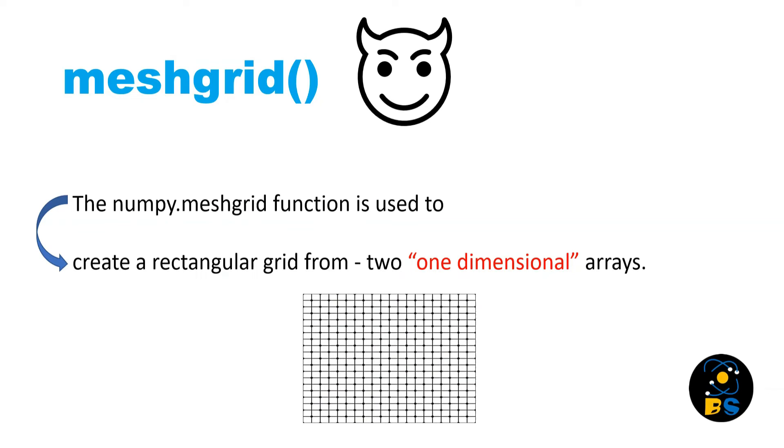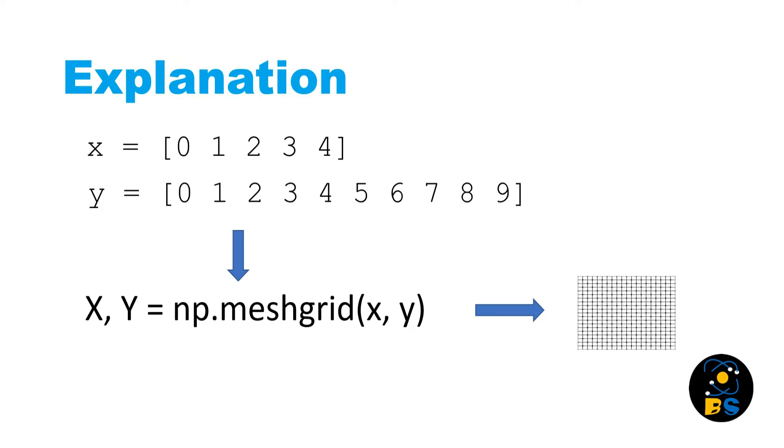Before jumping to the program, we should understand the meshgrid function because it's sometimes harder to understand initially for beginners. The meshgrid function is available in the numpy library and helps us create a rectangular grid from two one-dimensional arrays.